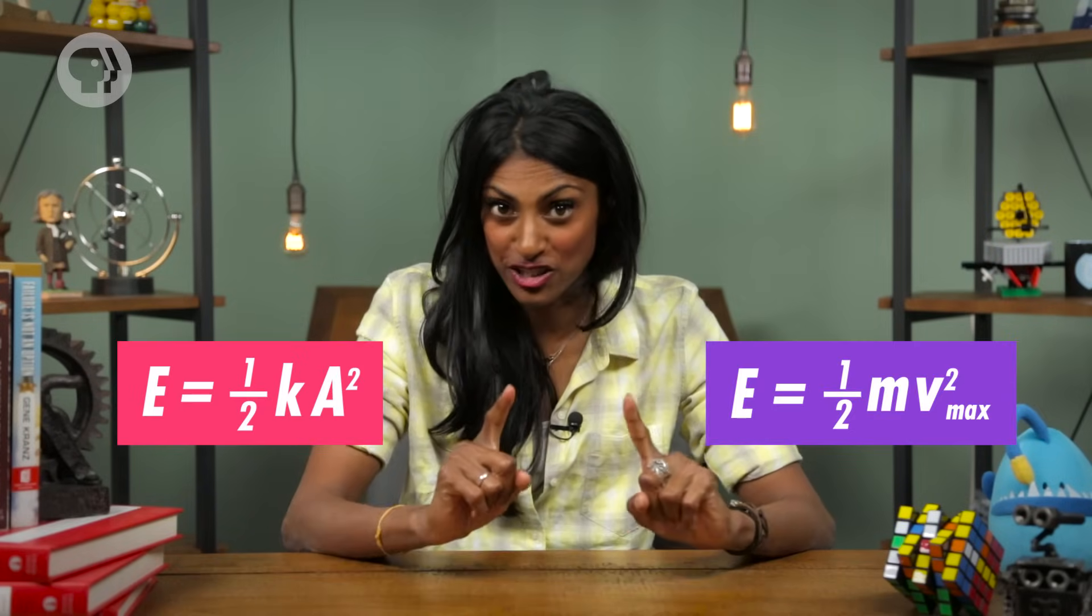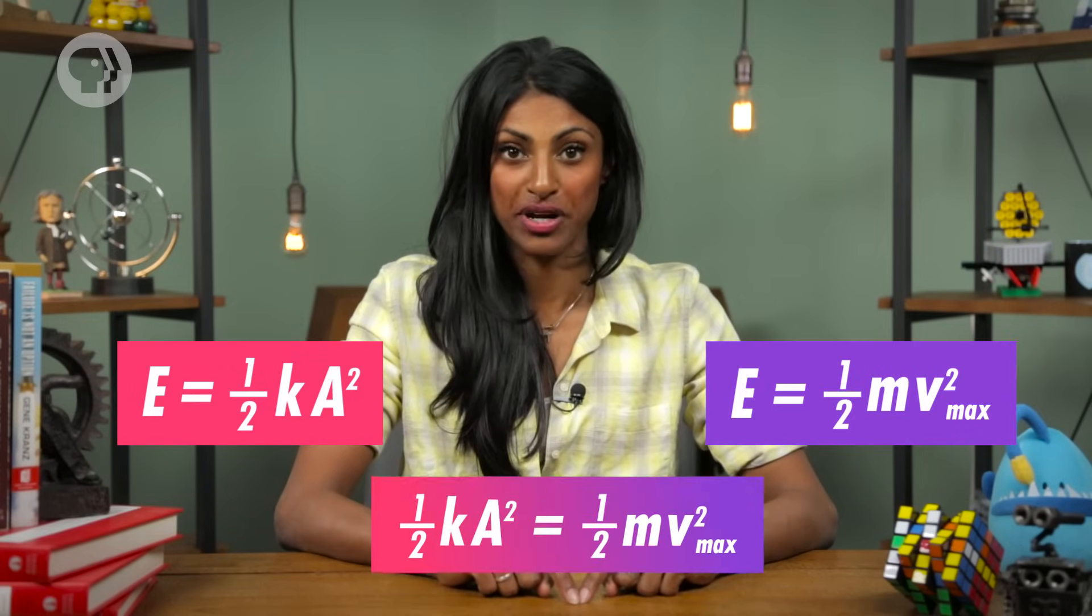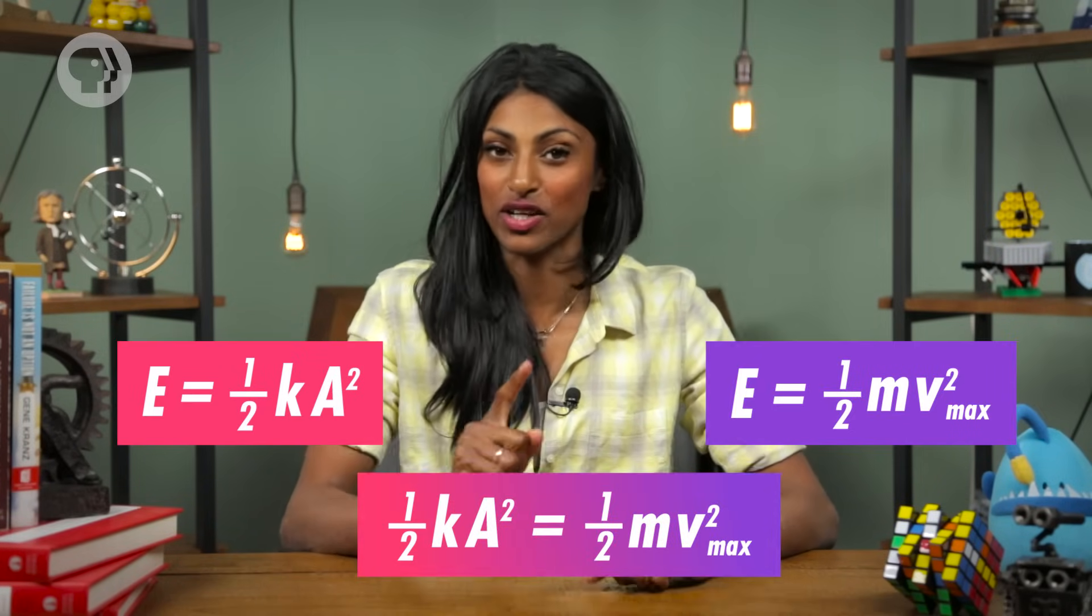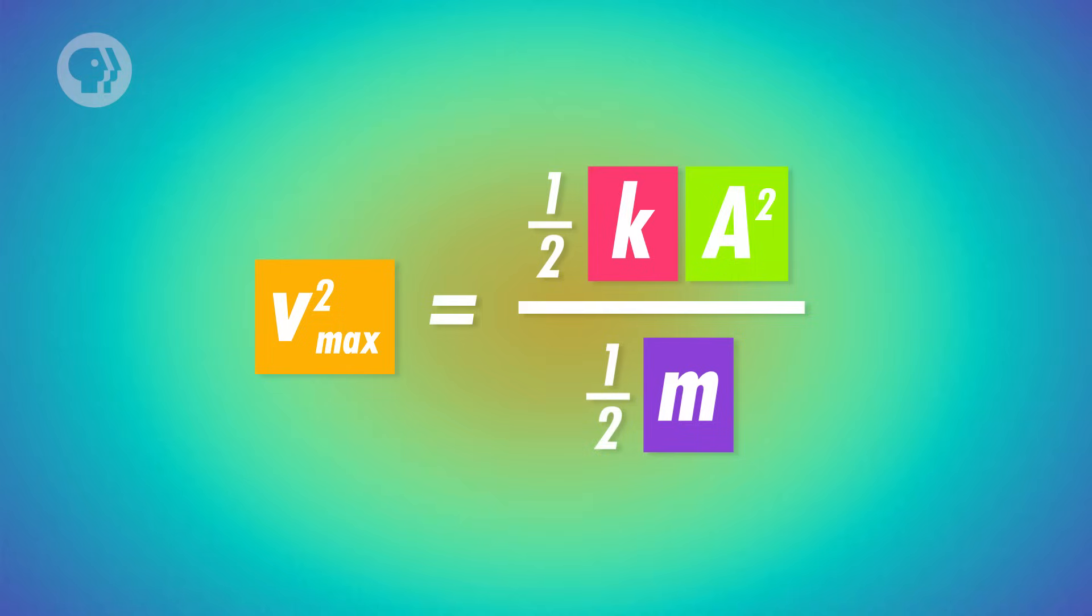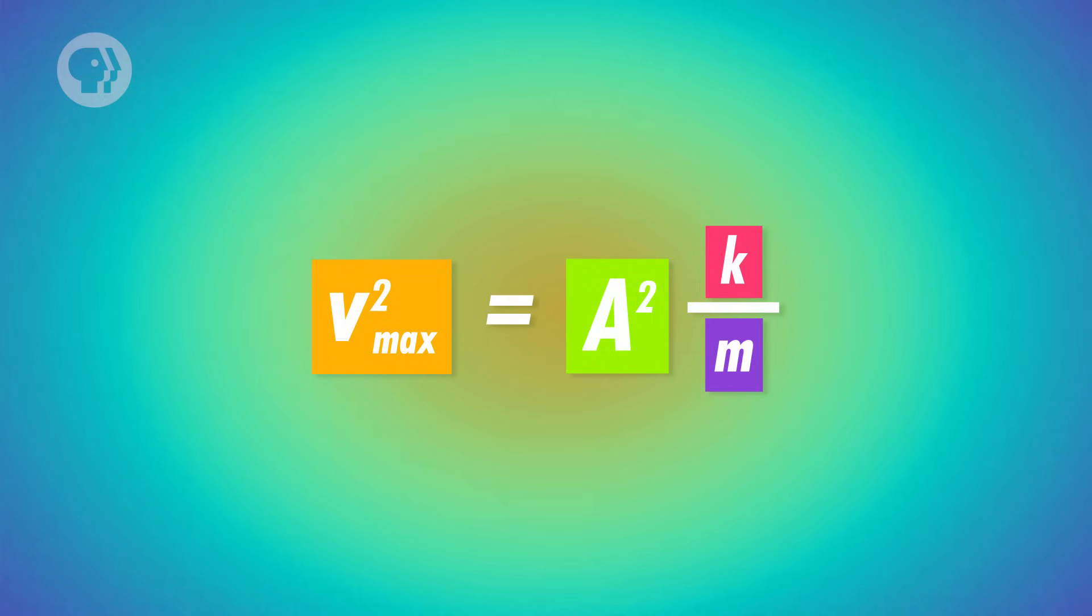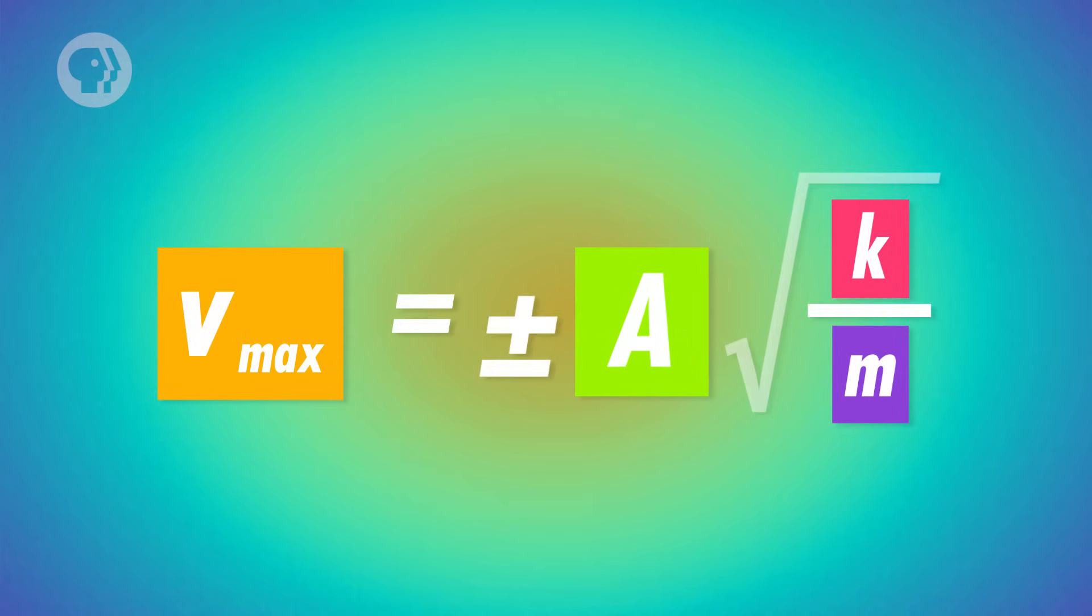Now we have two equations for the total energy in this oscillating spring, which we can combine into one equation. And if we use algebra to move around its variables, we can start to answer the second question we had about the ball. We wanted to know the ball's maximum velocity, and this equation tells us that it's equal to the amplitude times the square root of the spring constant divided by its mass. So we've answered our two questions about the ball on the spring. We know about its energy, and we have an equation for its maximum velocity.